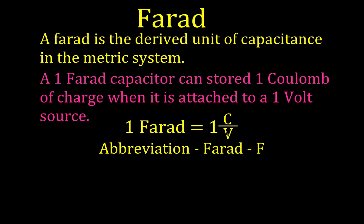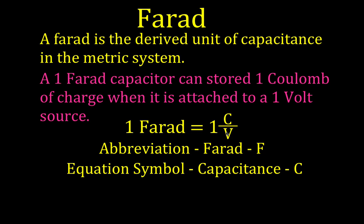The abbreviation for Farad is simply F. When we talk about Farads we're often talking about capacitance. The equation symbol for capacitance is C, and you can see that in the equation Q equals C times V. Q is the charge measured in Coulombs, C is the capacitance measured in Farads, and V is the voltage measured in volts.